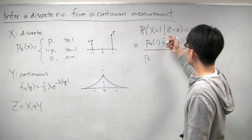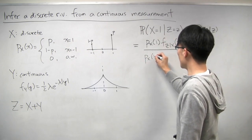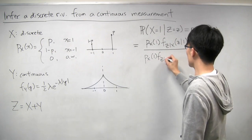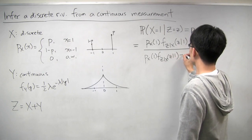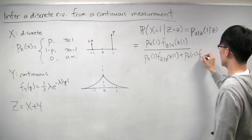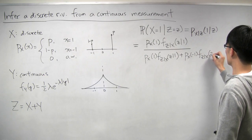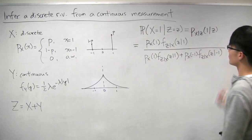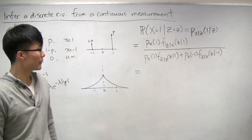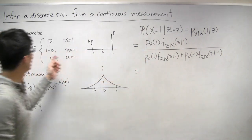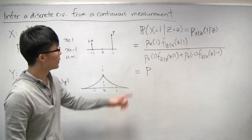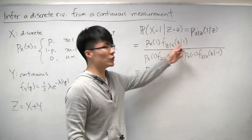One of the ways z can equal little z is in combination with x being equal to 1 — the probability of that is exactly the numerator. The other way is if x equals negative 1, giving us the second term. Now let's fill in what all these different terms are. The PMF of x evaluated at 1 is just p. And what is the conditional PDF of z given that x equals 1? That takes a little more work.